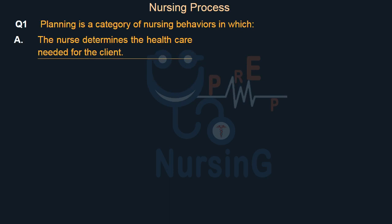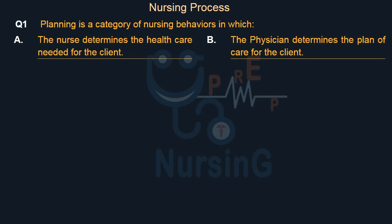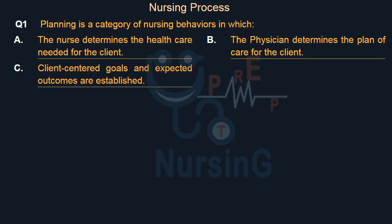Option A: The nurse determines the health care needed for the client. Option B: The physician determines the plan of care for the client. Option C: Client-centered goals and expected outcomes are established. Option D: The client determines the care needed.